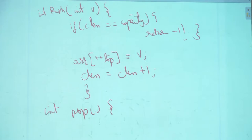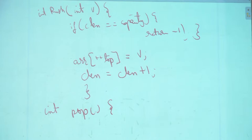Once it has passed through the guard — meaning cLength is more than zero and top is not minus one — I have to do two things: decrement top and give back the value. I do cLength = cLength - 1 first, then return the top value.